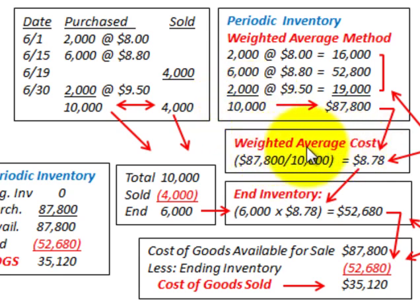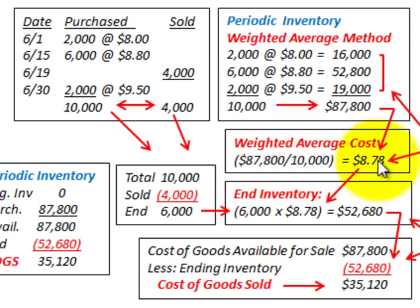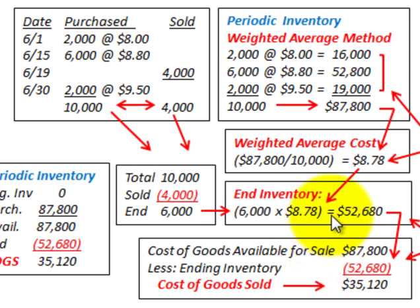For the weighted average cost, we take the total amount of $87,800 — the total cost for the period — and divide by the 10,000 units we have in inventory. So $87,800 divided by 10,000 gives us a unit cost of $8.78. This $8.78 is what we use to determine our ending inventory, and from that, our cost of goods sold using this periodic inventory method.